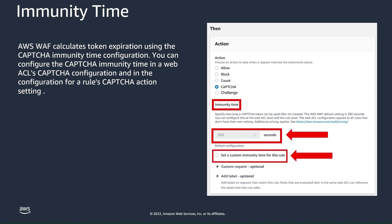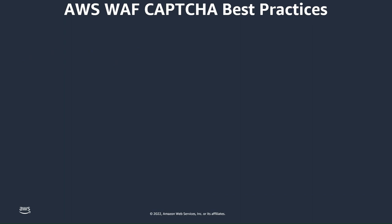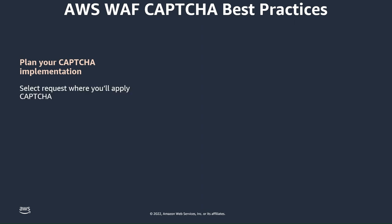I would note that solving a CAPTCHA can degrade your customer's website experience, so as a best practice, we recommend tuning your immunity time settings and rules to help mitigate the impact on the customer experience while still providing the protections you want. The first best practice is to plan your CAPTCHA implementation — select the requests where you'll apply CAPTCHA so that you present puzzles as needed, but avoid presenting them where they wouldn't be useful and might degrade the user experience. Identify requests you don't want impacted by CAPTCHA; for example, if a CAPTCHA check is already at your login page and the user is taken directly to another screen, requiring a CAPTCHA check at that second screen may not be necessary.